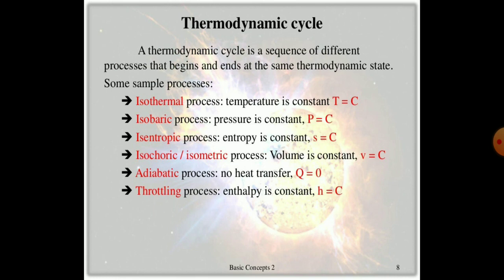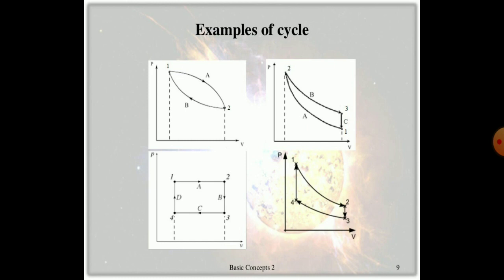The fifth process is adiabatic, in which no heat transfer takes place. The sixth is a throttling process, in which enthalpy remains constant. On screen, a PV and TS plane diagram shows the path functions and point functions of various processes. The path goes from point 1 to 2 along line A and returns along line B, with the area between representing heat transfer and work done.